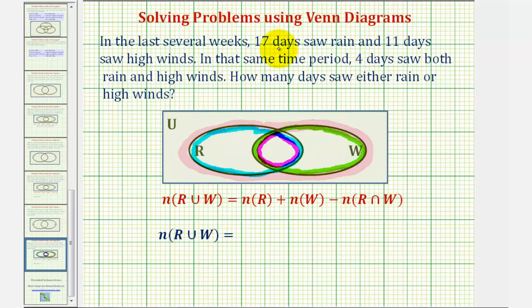To apply this formula for our situation, again we're looking for the number of elements in R union W, and we'll take the number of elements in set R, which is the number of days that saw rain, which is seventeen,